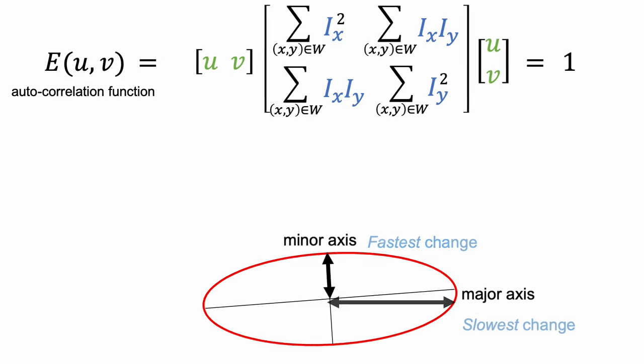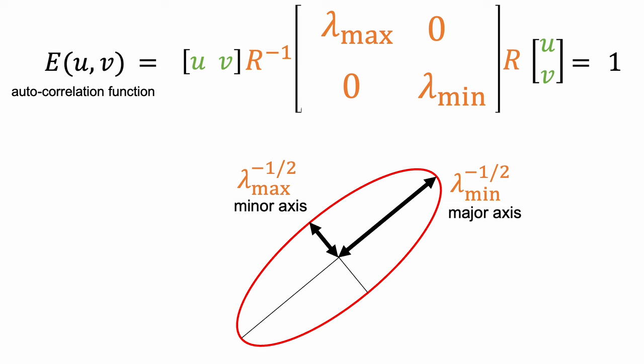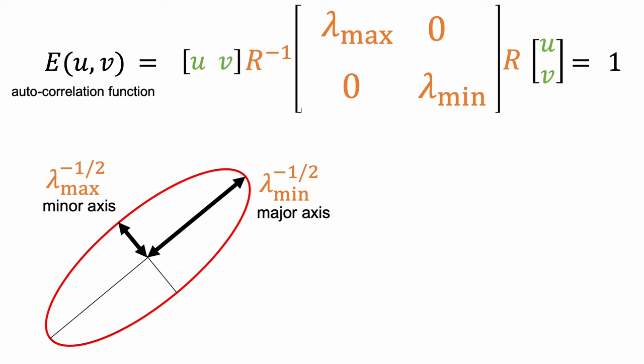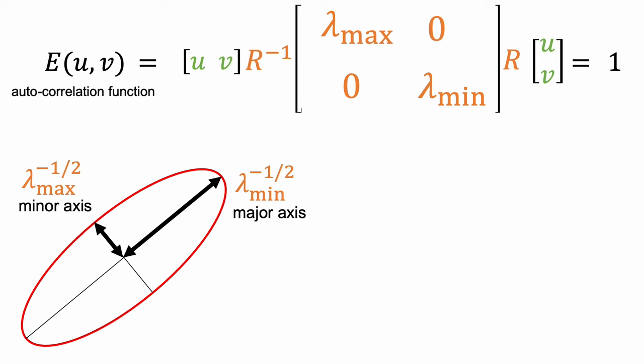For a general 2x2 matrix, we can factorize it using eigendecomposition. Like the diagonal cases, we have directions corresponding to the fastest and the slowest changes.